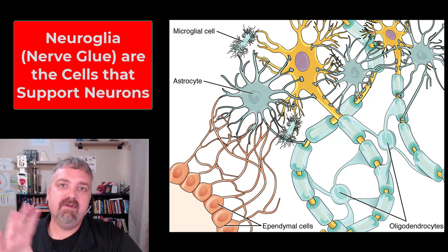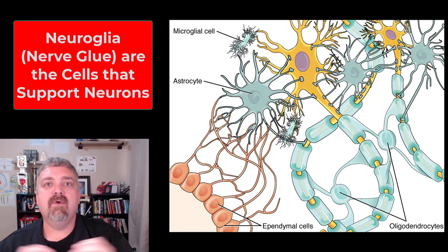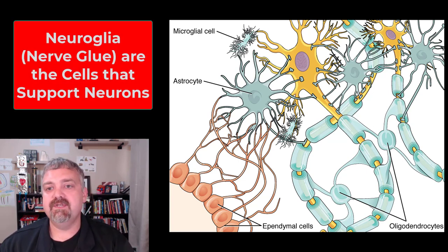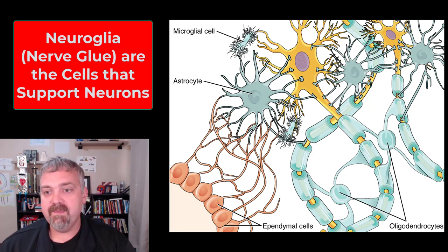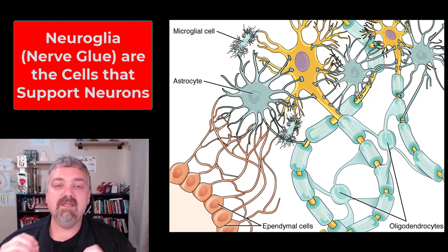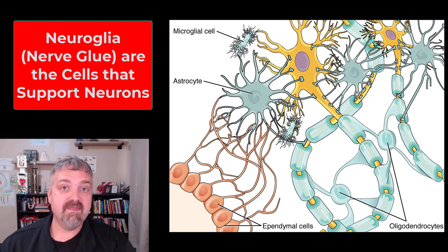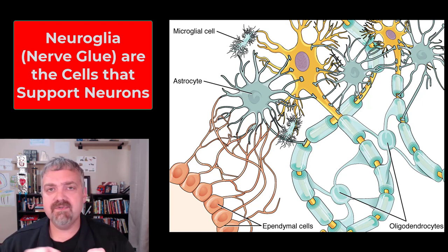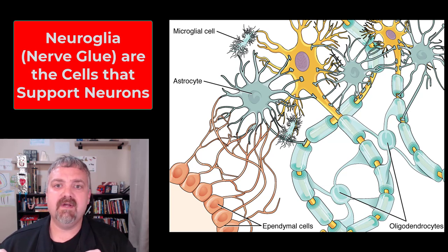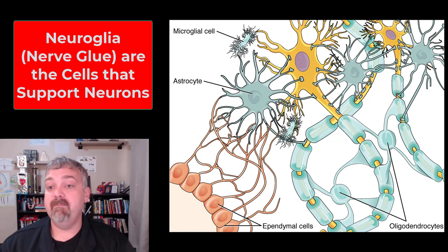Hey everybody, Dr. O here. So we have covered the neurons, now we are going to cover the other half of your neural tissue or your nervous system, which is the neuroglia. Glia means glue, so this word actually means nerve glue. These neuroglial cells will cover six types: four in the central nervous system and two in the peripheral nervous system. They make up about half the volume of your nervous system, so they are very, very important. They don't send and receive electrical impulses like neurons do, but they support the neurons and protect them so they can do their job.